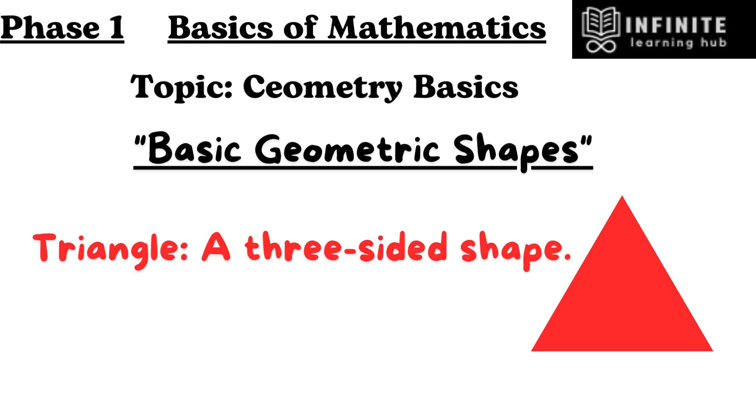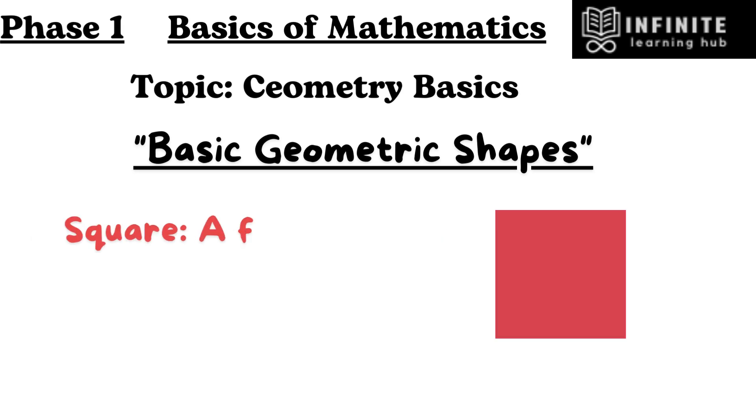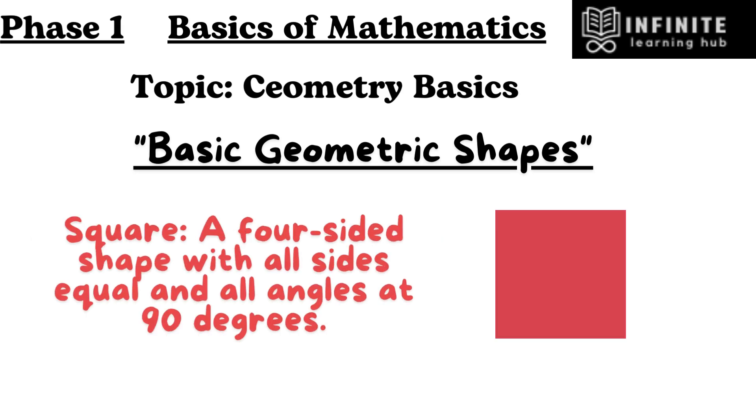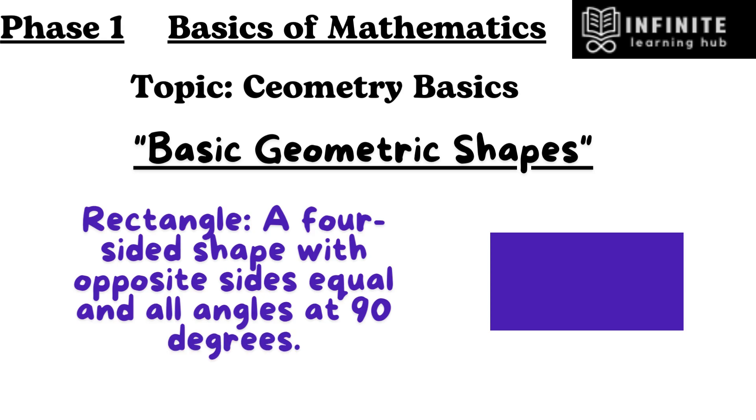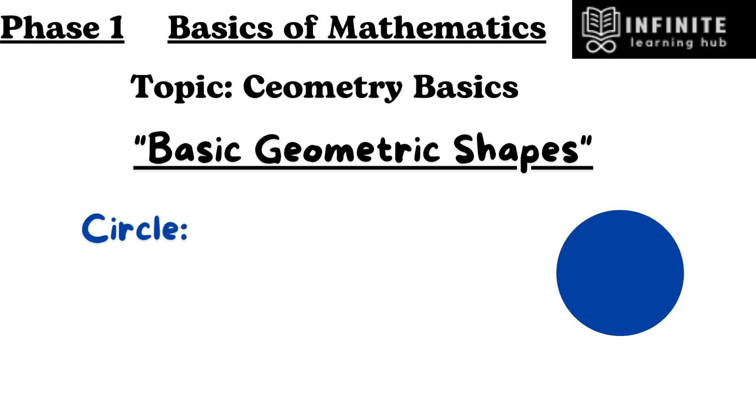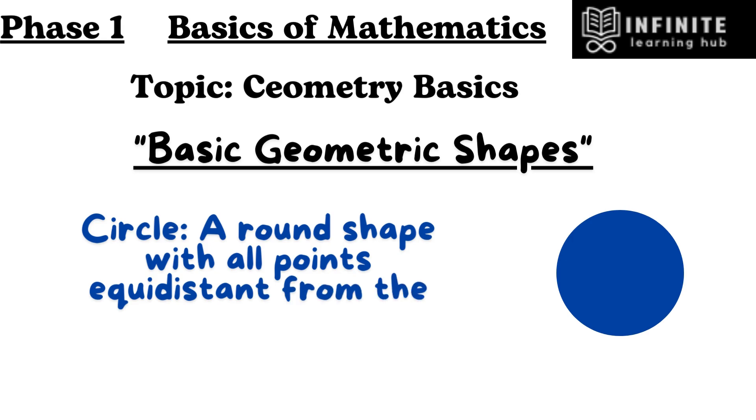Triangle: a three-sided shape. Square: a four-sided shape with all sides equal and all angles at 90 degrees. Rectangle: a four-sided shape with opposite sides equal and all angles at 90 degrees. Circle: a round shape with all points equidistant from the center.